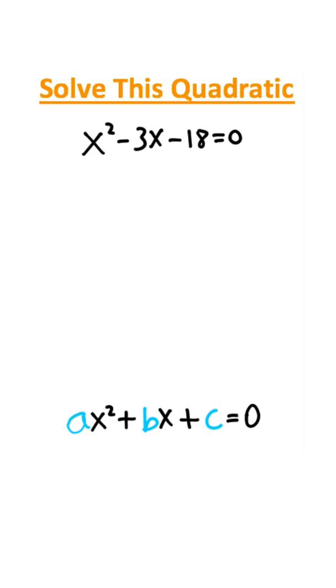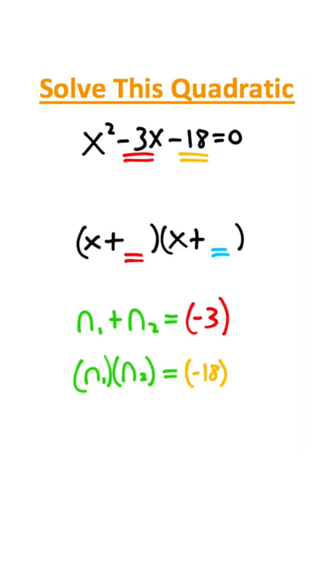Now if there's nothing in front of the x squared term, you can just simply figure out what two numbers add to give you the middle term and multiply to give you the end term.